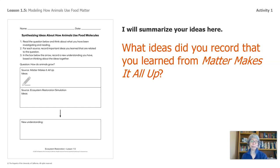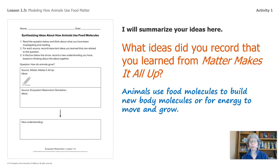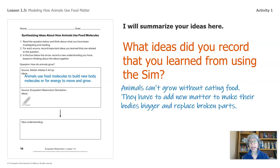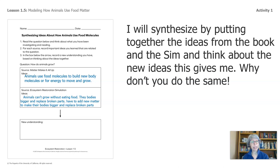I'll summarize your ideas here. So what did you record from Matter Makes It All Up? Animals use food molecules to build new body molecules or for energy to move and grow — jot that down right there. What about the sim? Did you go back and look at the sim, or do you already have some ideas written down from when you last saw the ecosystem simulation? Animals can't grow without eating food. They have to add new matter to make their bodies bigger and replace broken parts. Now I'm going to take these two ideas and synthesize them together to create a new idea. You can pause the video and do the same yourself.